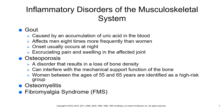Gout is a disease that results from the accumulation of uric acid in the blood. When we think about gout or gouty arthritis, this is a disease that results from an accumulation of uric acid in the blood, and this causes crystals to form and accumulate around the joint.